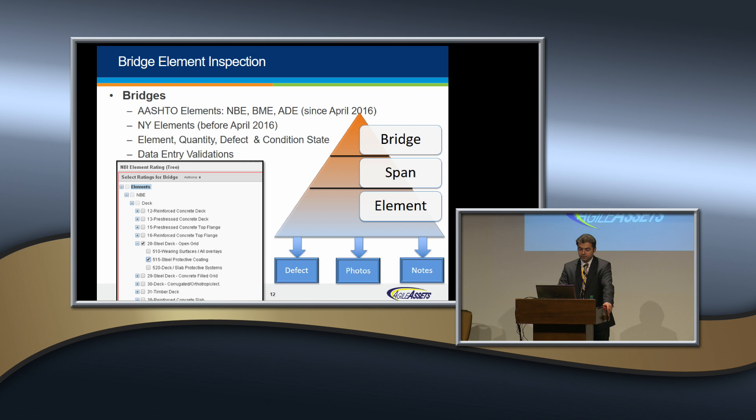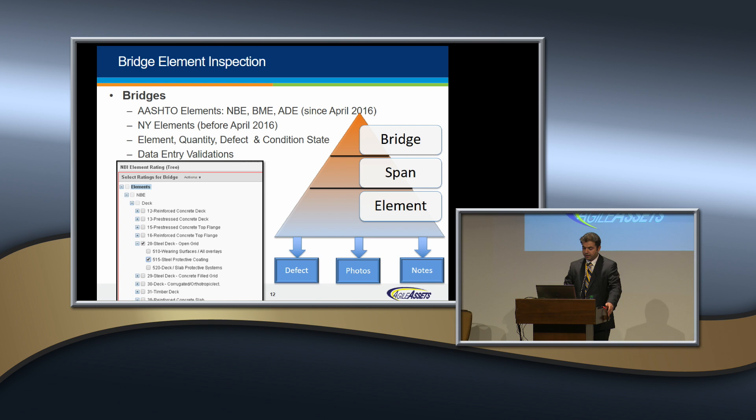These are required by some business rules. For example, if you have a very bad condition for one element, the user has to attach a photo and notes to justify that rating. Another complexity for bridge elements is the relationship between child and parent elements, which the system can handle.